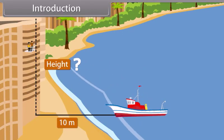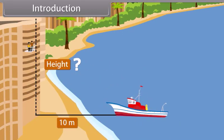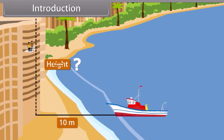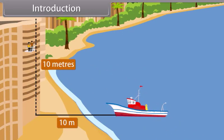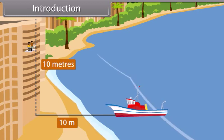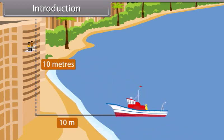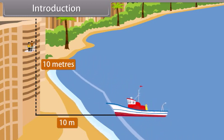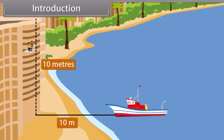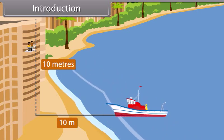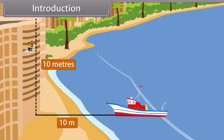The answer to your question — that is, the height of the building — is 10 meters. Anvesha used trigonometry to answer Vedika's question. In this lesson, you will learn about the relationship between angles and sides of a triangle.